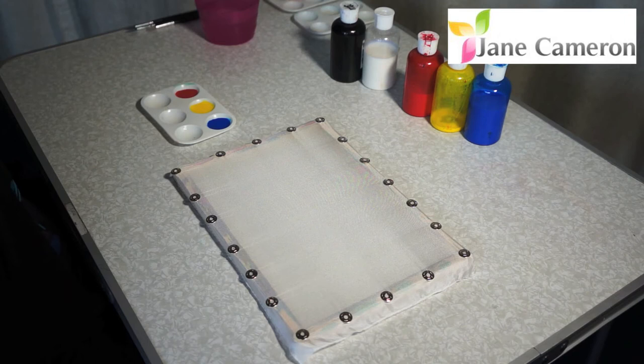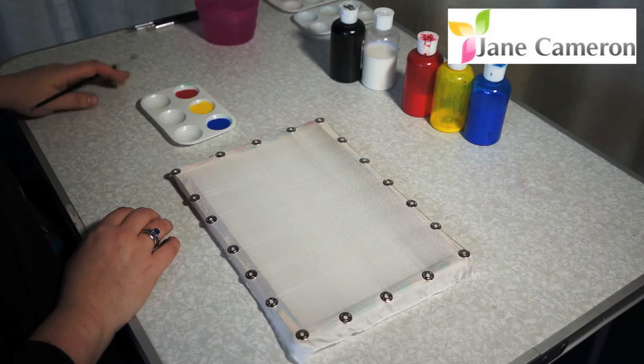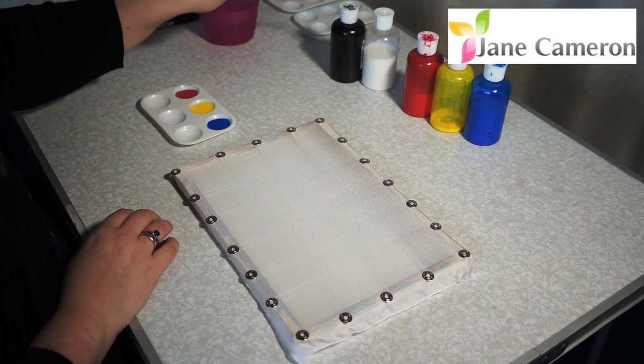So in order to mix your own colours of silk paint, you can mix any colour you like if you've got the three primary colours: your red, your yellow and your blue, and if you've got some black.